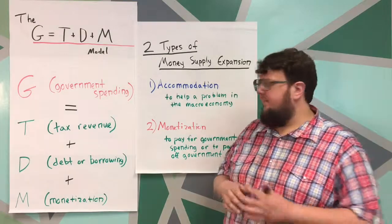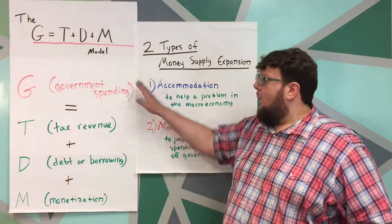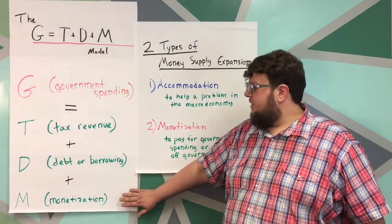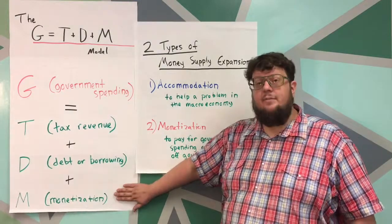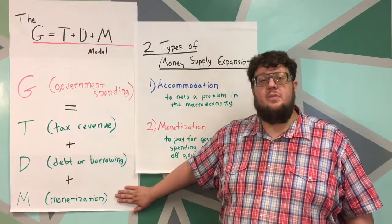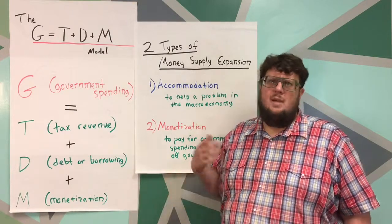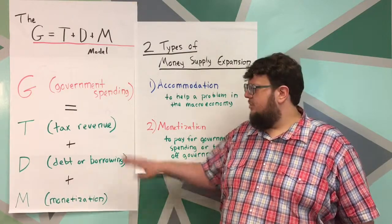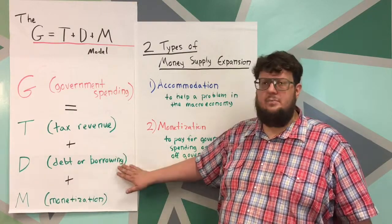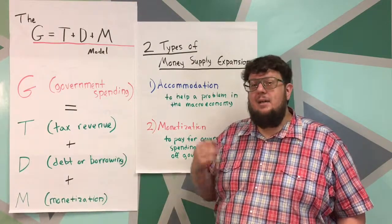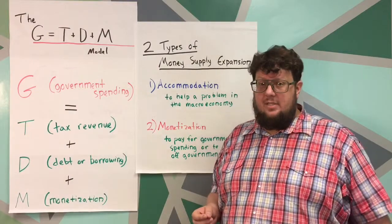As you know from the previous video, when the government is printing money for the purposes of spending it immediately, or sometimes even printing it to try to get out from under some debt, that is called monetization.